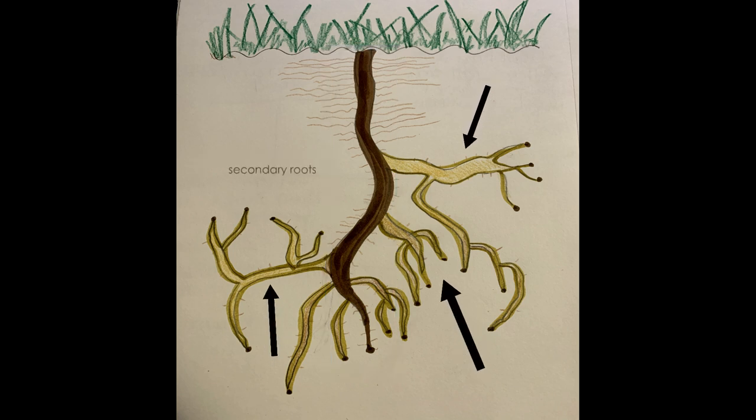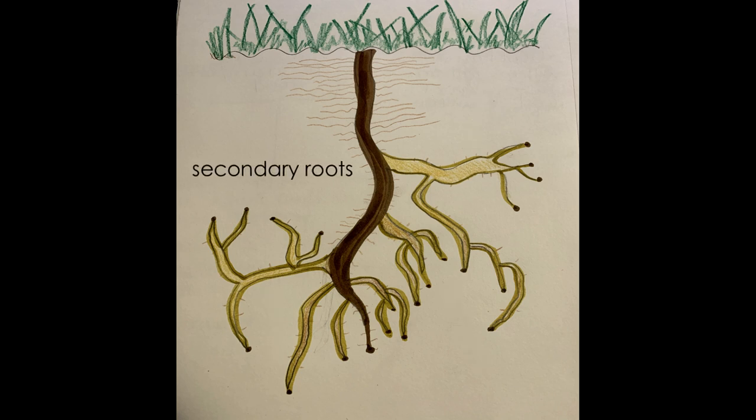Then we have our secondary roots. Secondary roots are roots that branch off from the primary root. They grow down at an angle and help bring more water and minerals to the plant.